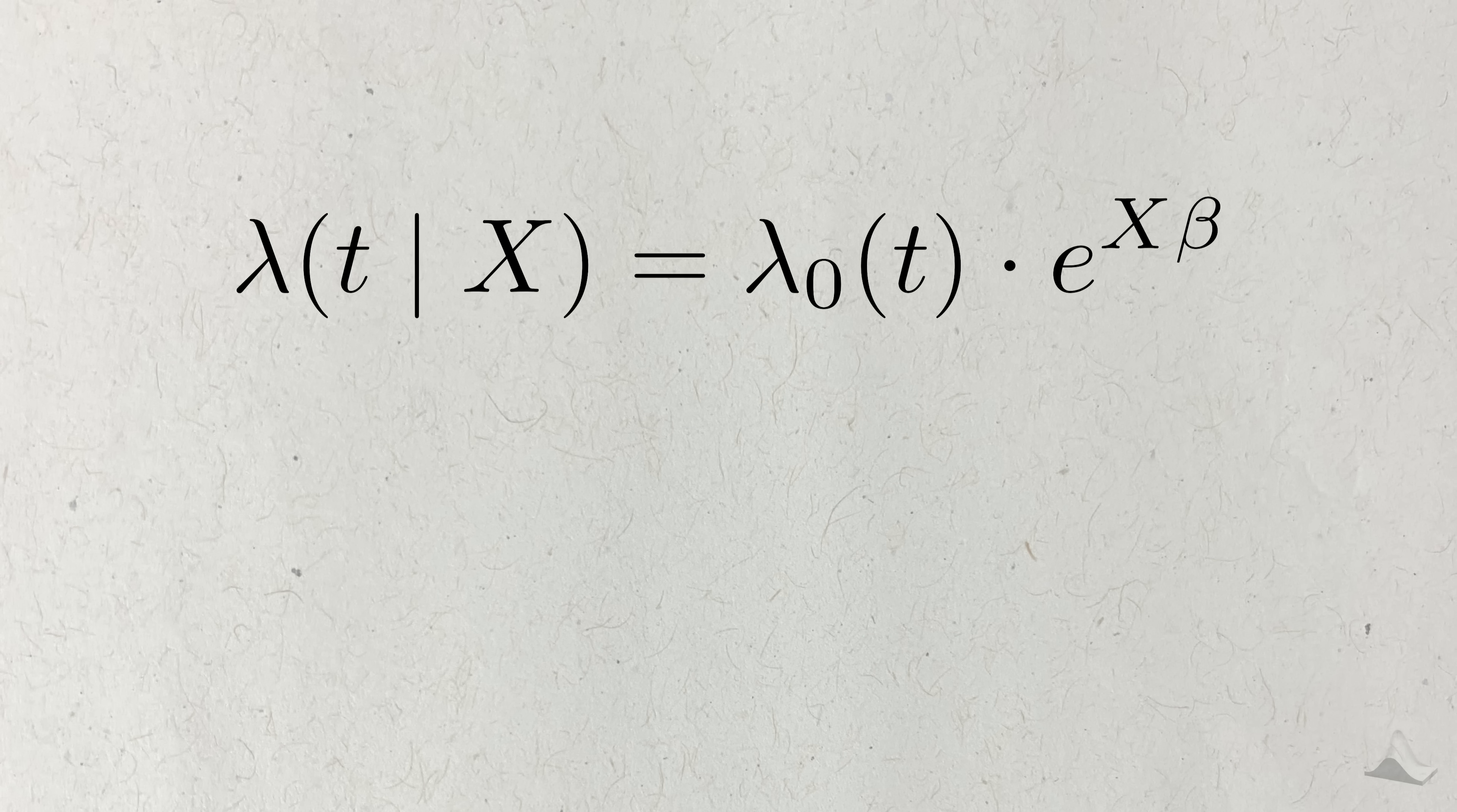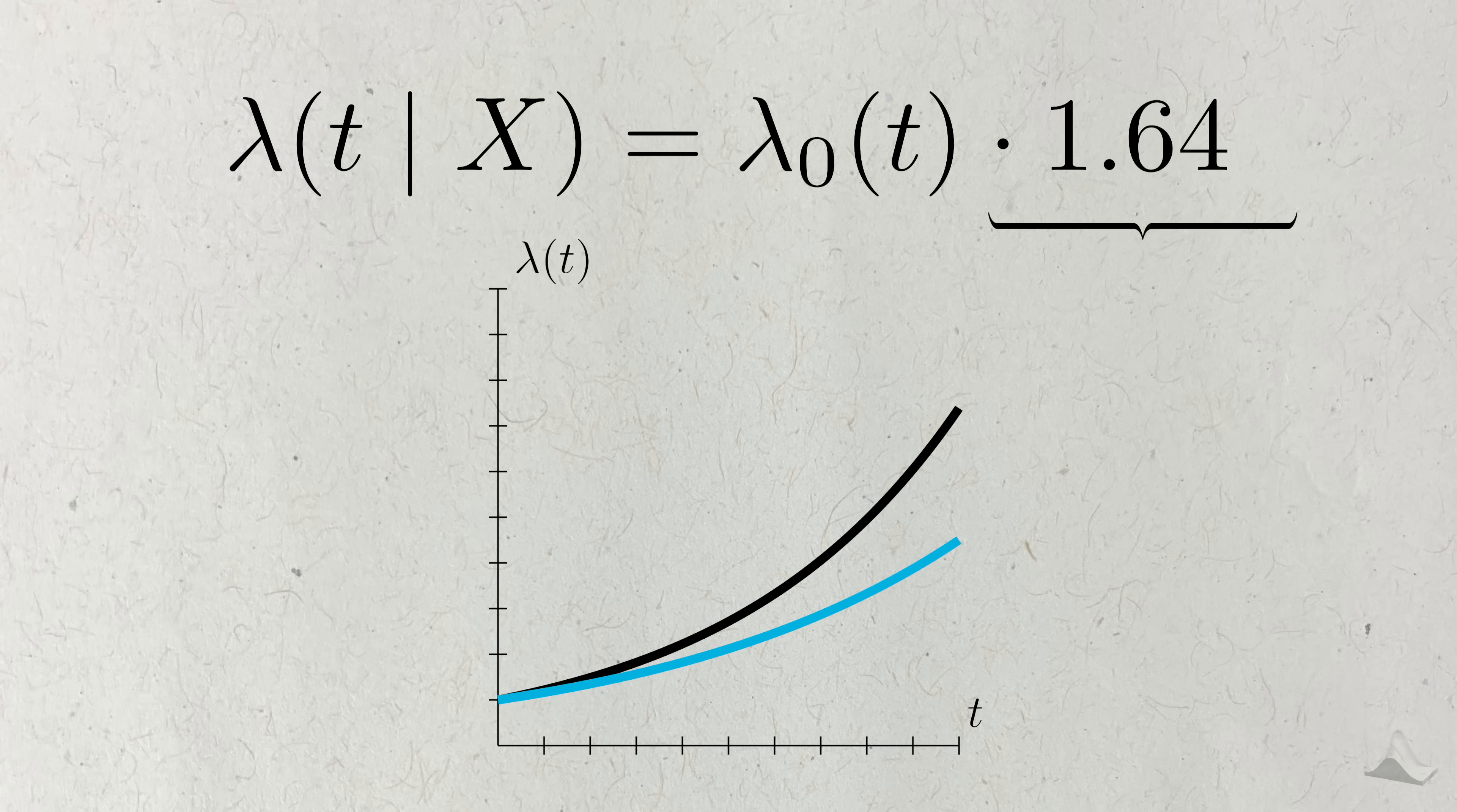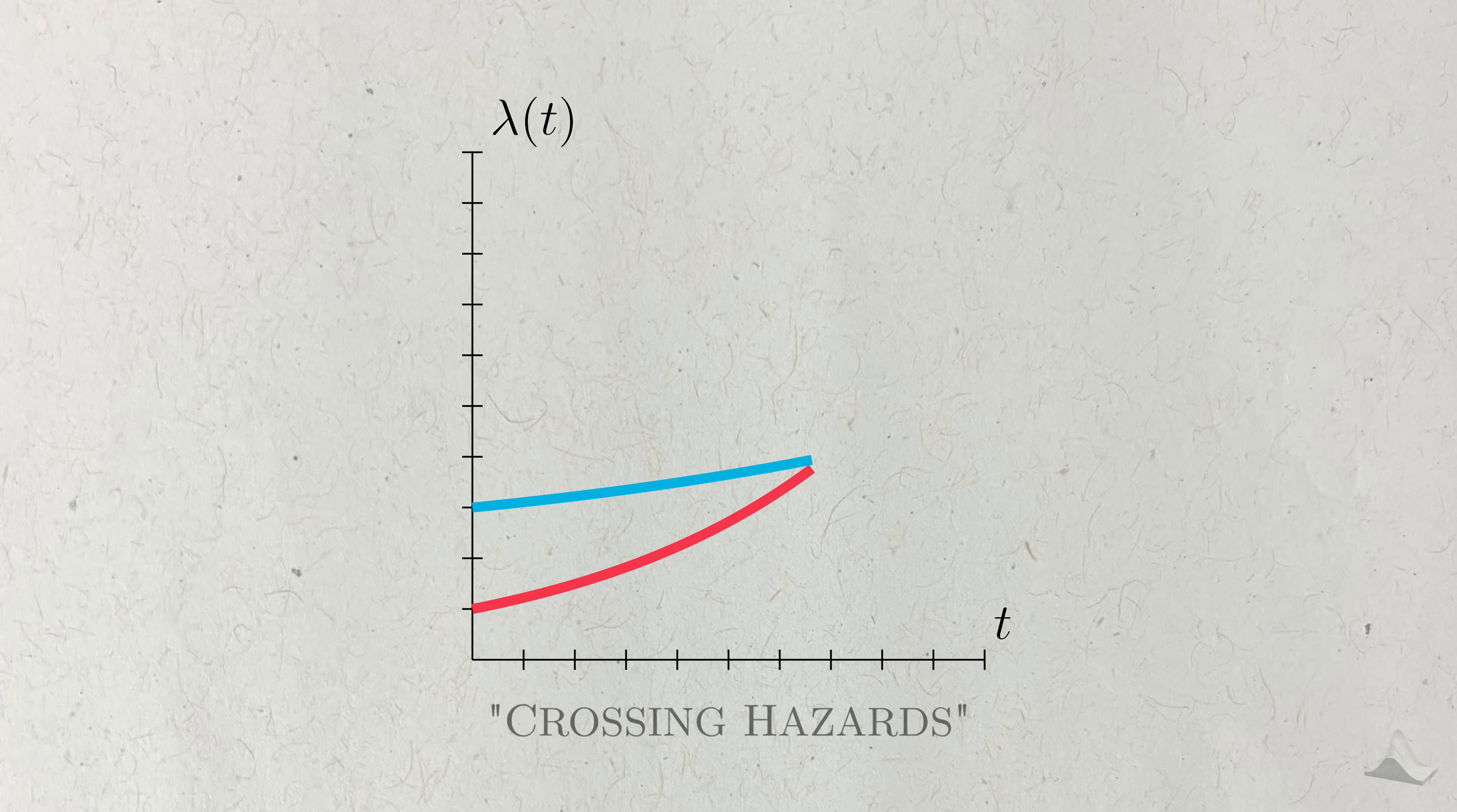When the parameter beta is negative, this causes the exponential expression to be less than 1, meaning that the variable reduces hazard. Conversely, a positive beta would produce a factor greater than 1, meaning that this variable is associated with increased hazard. Some implementations of Cox's model have a negative sign in the exponential, so the parameter interpretations would be reversed in this case. As with many statistical models, this particular model assumes that the hazard functions change proportionally. If we have what's called crossing hazards, then that's a huge violation of this model's assumptions, and a different one should be used.